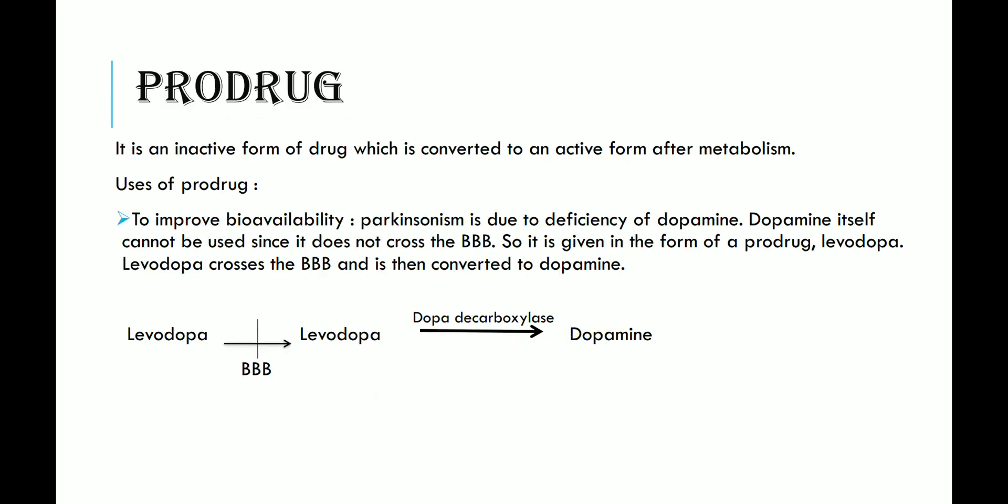Before that, we will see what a prodrug is. A prodrug is an inactive form of a drug which is converted to an active form after metabolism. When you swallow a drug, it gets disintegrated into dissolution, then it binds to protein. The drug is still not in active form; it undergoes metabolism, and then the inactive form is converted into the active form. The use of a prodrug is to improve bioavailability.